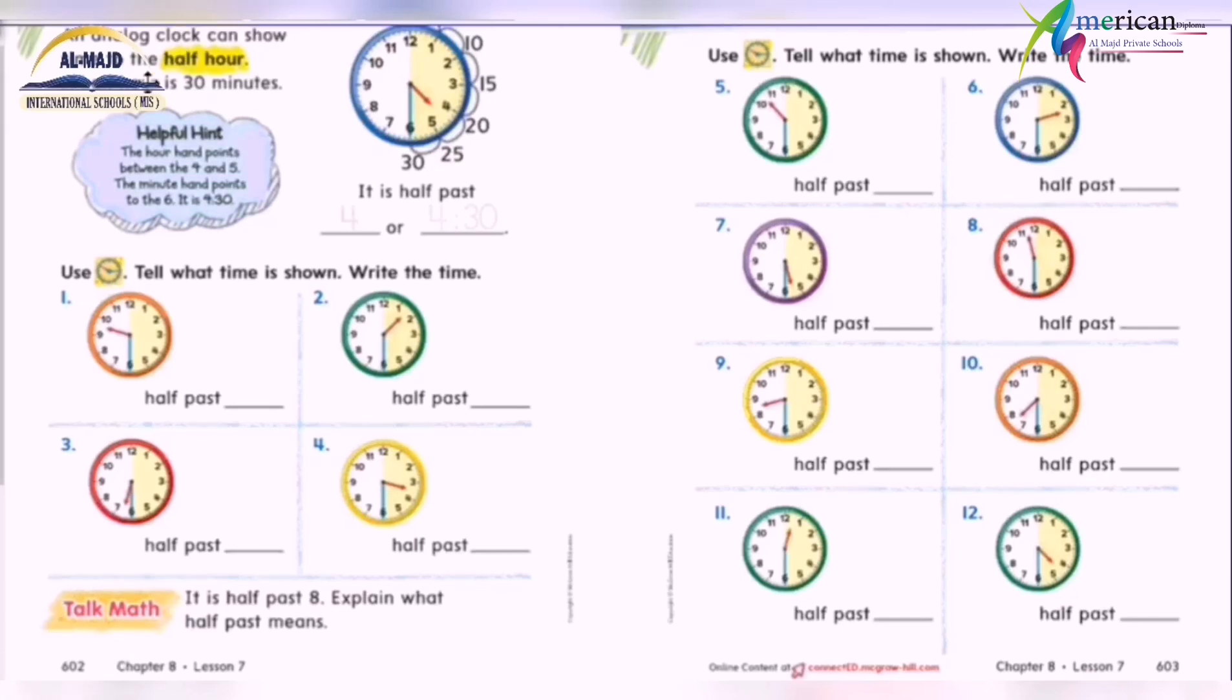Here we can see the hour hand on four, the minute hand on six, so we say it's half past four. Or in the digital way, we say it's four thirty. Here the hour hand is on nine, the minute hand on six.